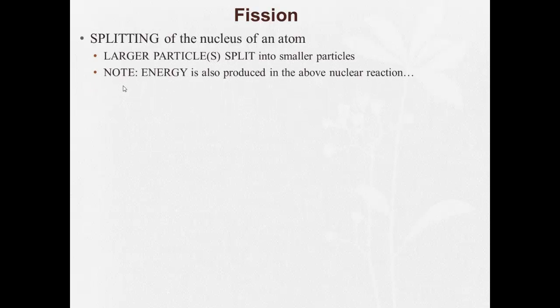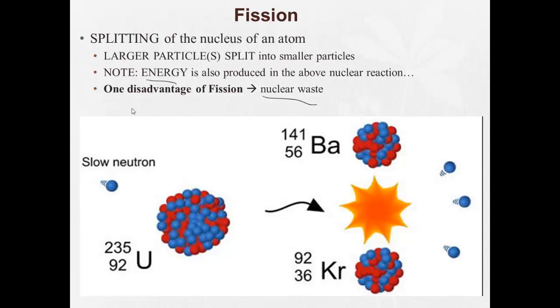Alright, so let's take a closer look at fission. Fission involves splitting the nucleus of the atom, where larger particles split into smaller particles. And energy is produced in this nuclear reaction. Now, there's a very important disadvantage of fission that you have to remember is nuclear waste. So while fission can be a very good source of energy, the fact that there's nuclear waste that's got to be dealt with after the fact can create a bit of a problem.